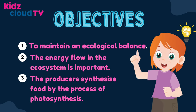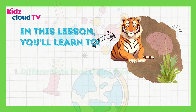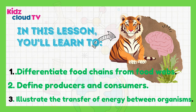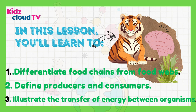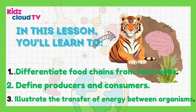Objectives: First, to maintain an ecological balance. Second, the energy flow in the ecosystem is important. Third, the producers synthesize food by the process of photosynthesis. In this lesson, you'll learn to: first, differentiate food chains from food webs; second, define producers and consumers; third, illustrate the transfer of energy between organisms.